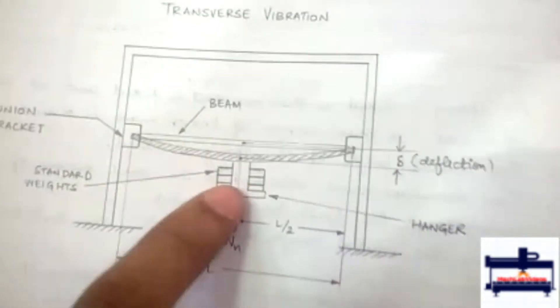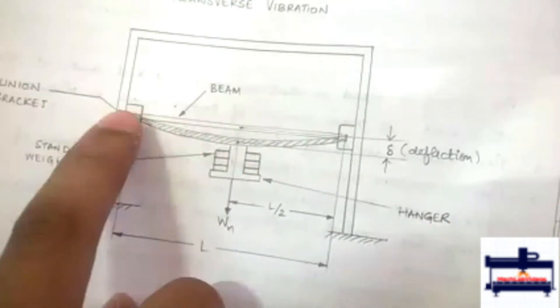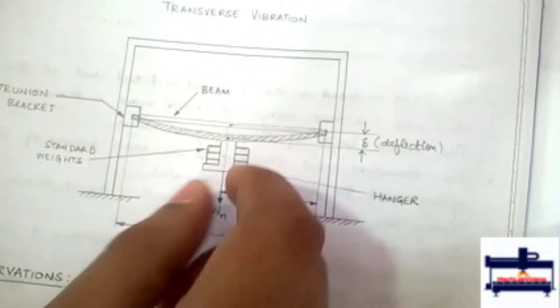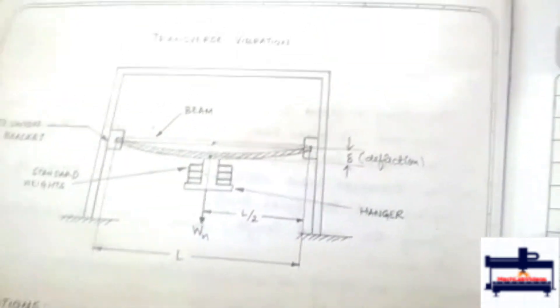The experimental transverse vibration setup works as follows: the loading happens perpendicular to the axis of the shaft, and once the load is pulled and released, it causes vibration.